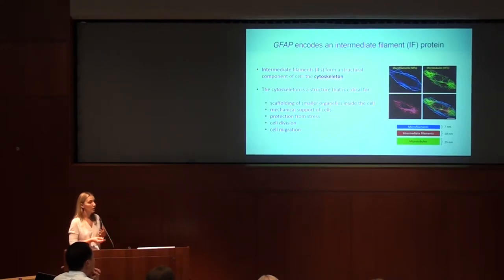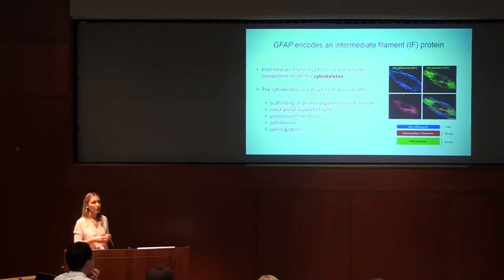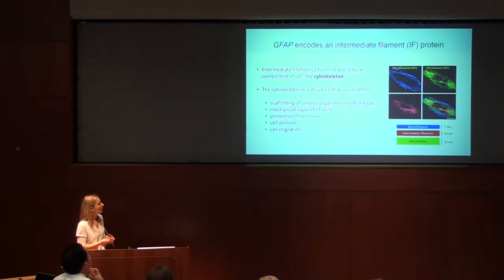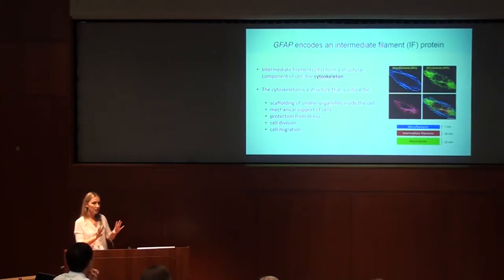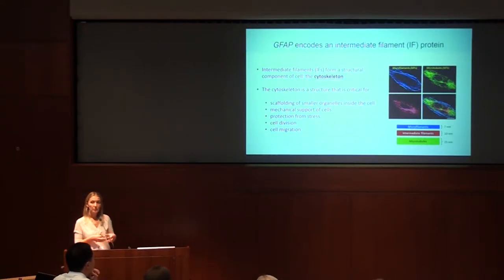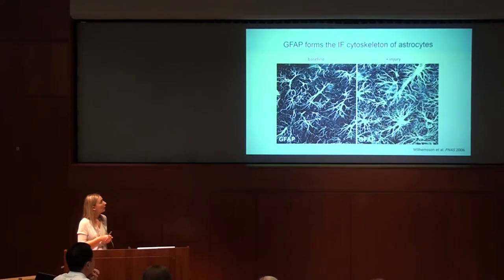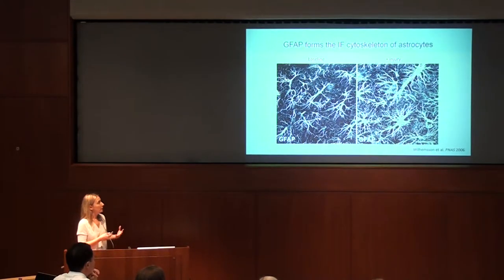Overall, the cytoskeleton performs many important functions. Together, these three systems work to help cells divide and move, and give the cell its size and shape. Intermediate filaments in particular are important for organizing the landscape of the cell, keeping smaller organelles where they need to be, and are really important in protecting cells from different types of stress — whether mechanical, chemical, and so on. GFAP specifically forms the cytoskeleton of astrocytes.